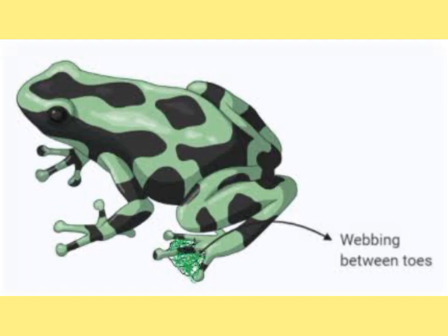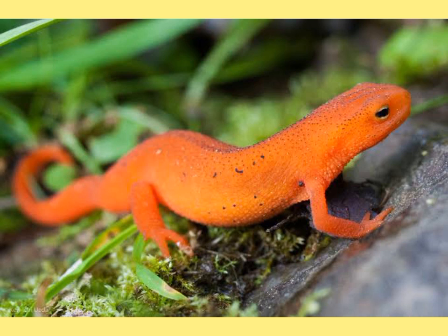Amphibians have four limbs. In frogs and toads, the hind feet have a web of skin between the toes. This provides a large surface area to push against the water when the animal is swimming. Newts differ from frogs and toads in having a tail. They swim by a wriggling fish-like movement of their bodies and make less use of their limbs for swimming.